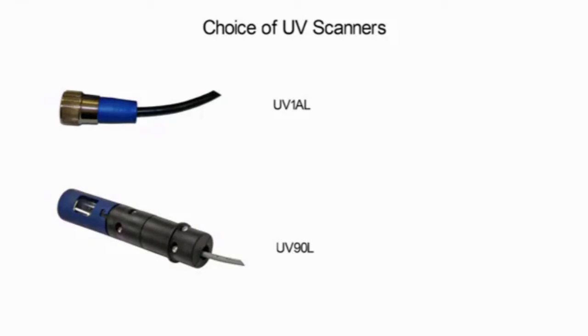The UV-1AL and UV-90L ultraviolet flame scanners are non-self-checking and should be applied only to burners that cycle a minimum of once per 24 hours.